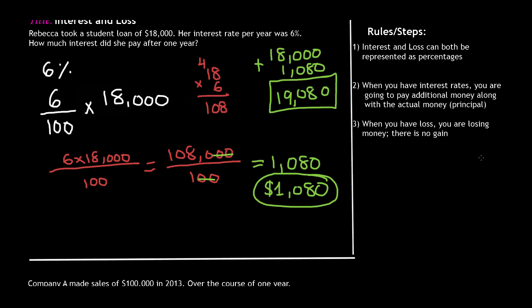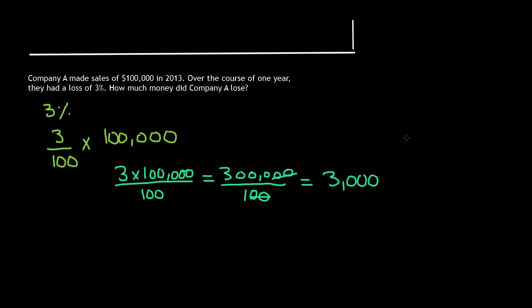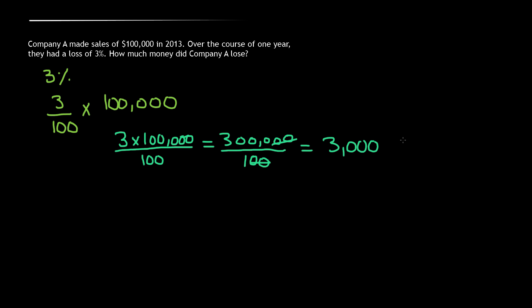Going back to step three: when you have a loss, you're losing money — there's no gain. So this three thousand dollars is our loss. That means Company A lost three thousand dollars over the course of one year. Their total sales were one hundred thousand dollars.